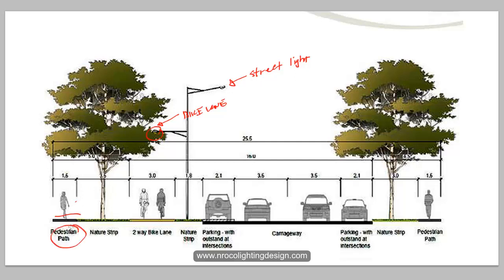And there is another one here that we need to consider, which is for the pedestrian. Based on this design, how are we going to light this area with only one pole covering everything — including the pedestrian, the bike lane, the parking bay, and also the driveway or the road.